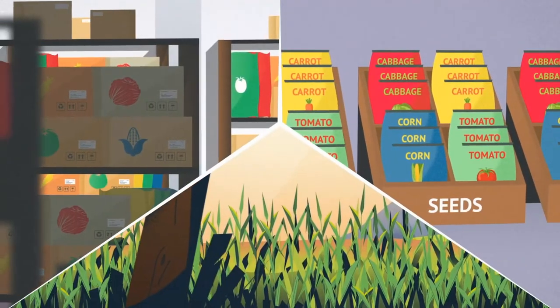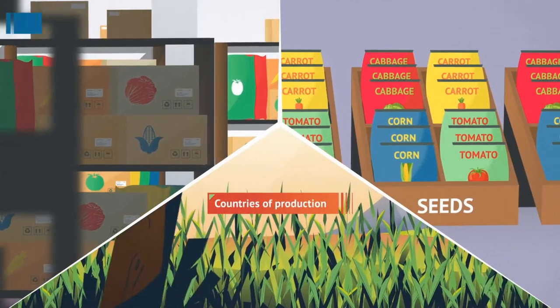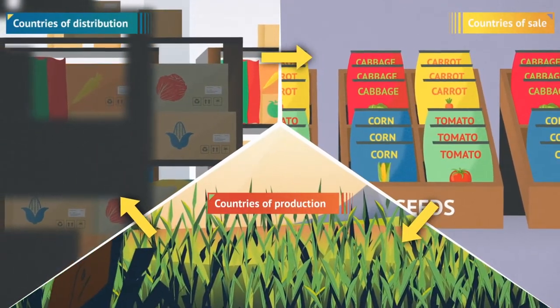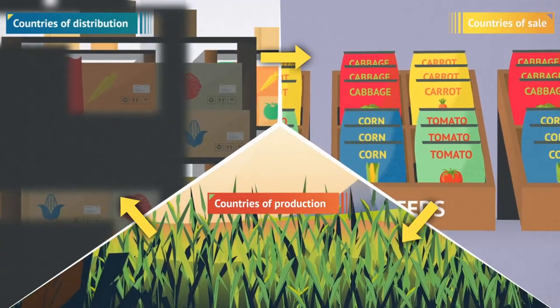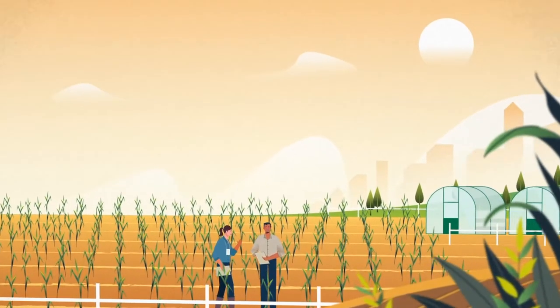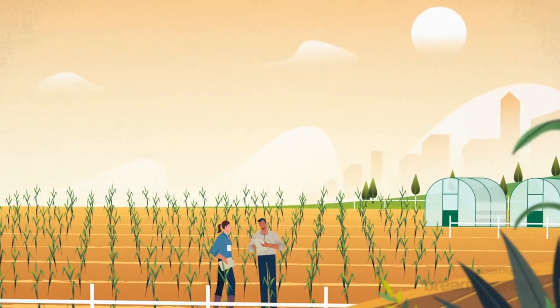Seed producers will benefit from multilateral agreements between countries of production, countries of distribution, and countries of sale that significantly streamline the frequently used re-export process. NPPOs will be equipped to better understand seed production practices, meaning greater transparency for both sides.